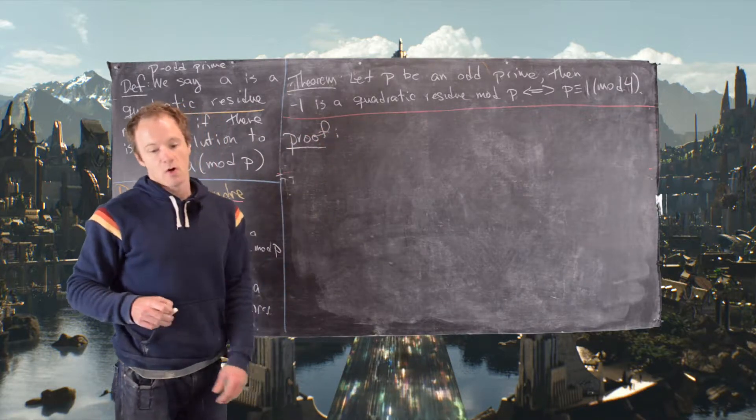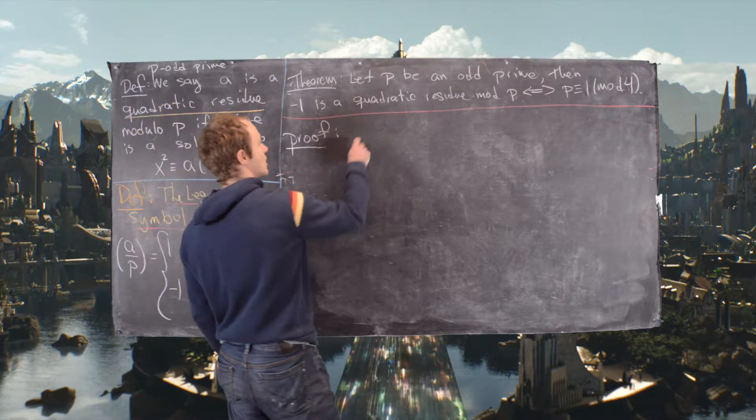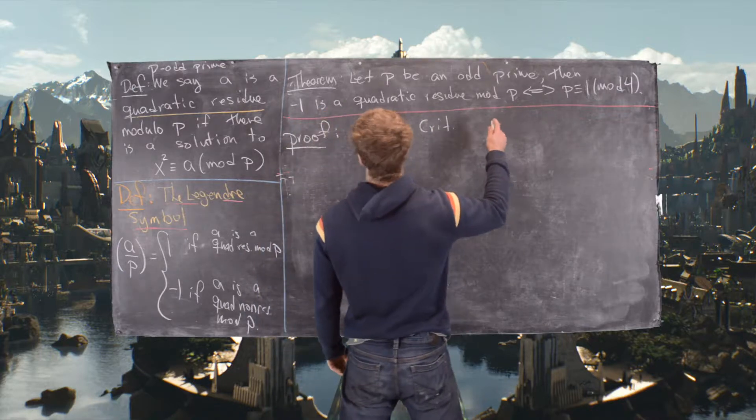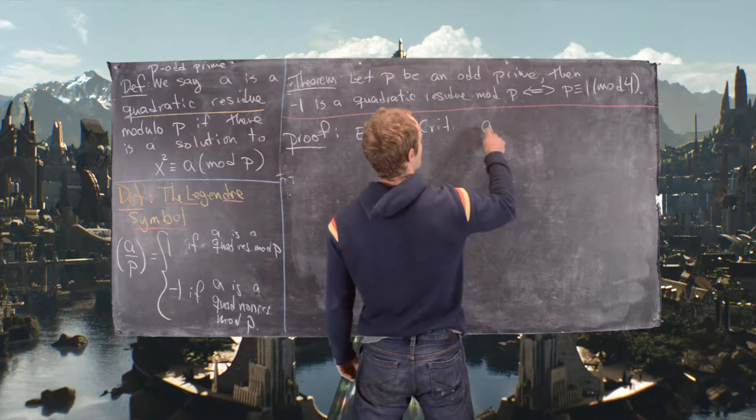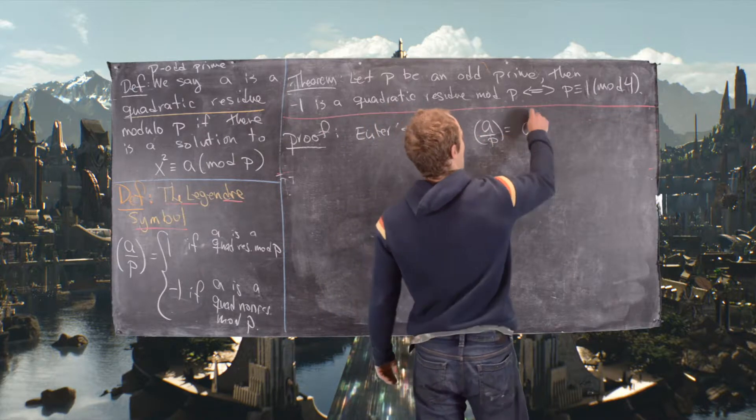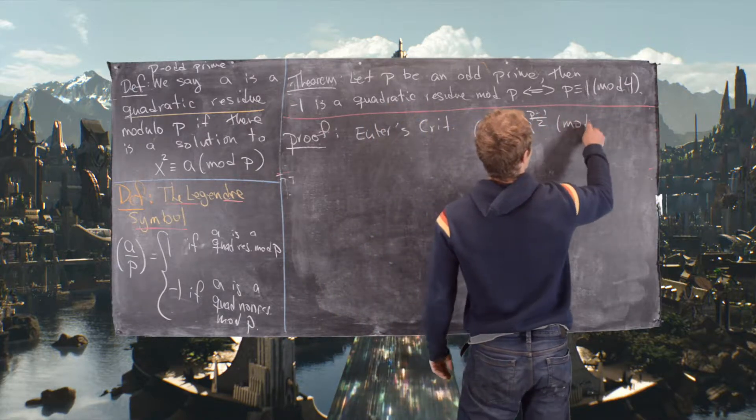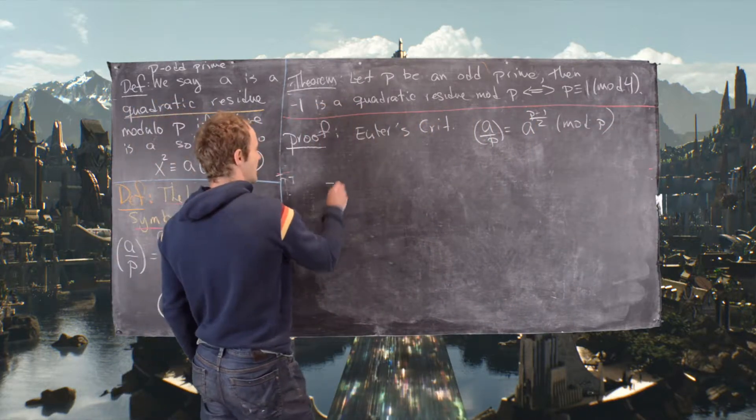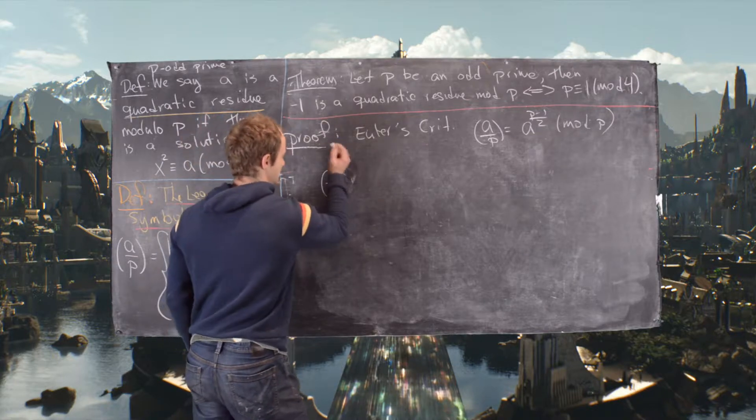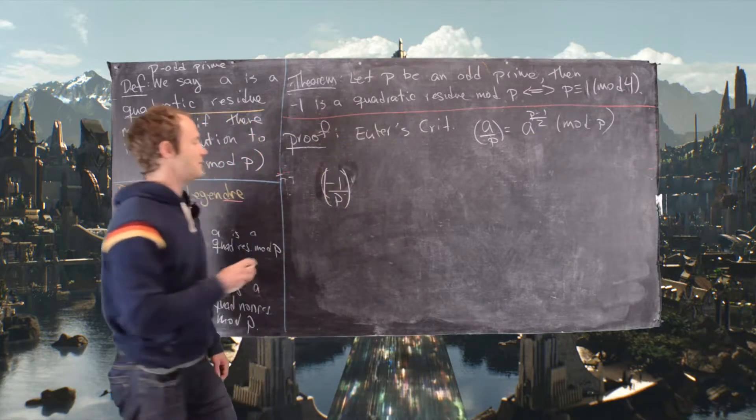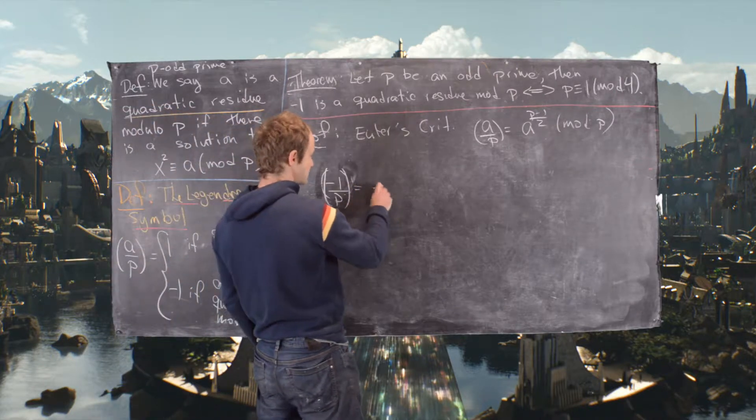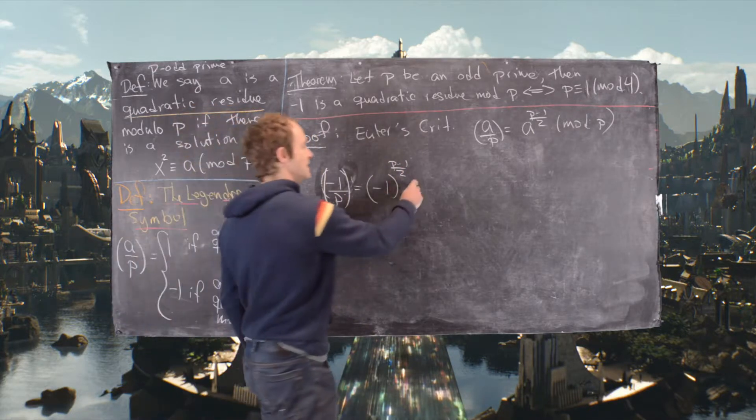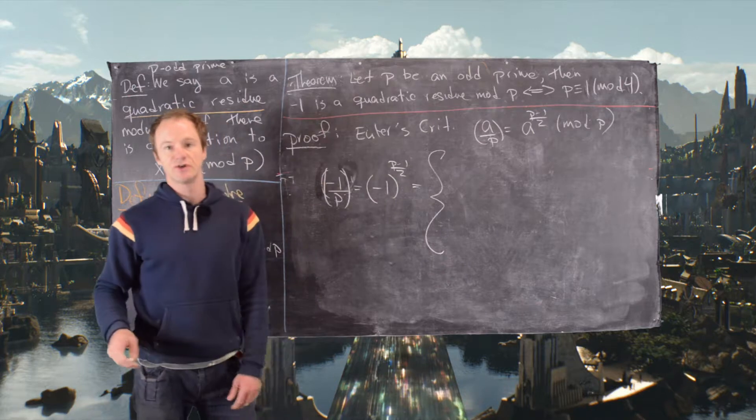And what we'll use is Euler's criterion. So let's recall Euler's criterion which says that a by p, so this Legendre symbol, is a to the p minus 1 over 2 mod p. Okay, good. So now let's do that with negative 1. Let's do that with negative 1 by p, so that's going to give us negative 1 to the p minus 1 over 2.